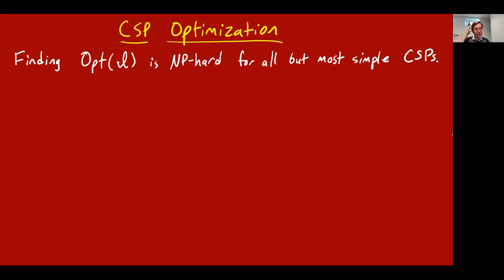It's already NP-hard for max cut, as you well know. So in light of that, when things are NP-hard, you have to try some mitigation strategies, and one of them is what's called approximation. That's the mitigation strategy I'll talk about in this lecture.